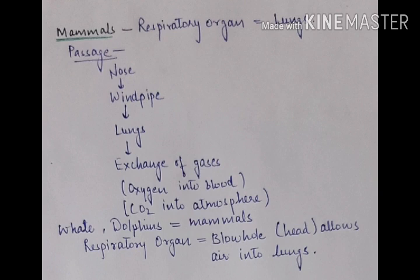Now let's deal with mammals. The respiratory organ for mammals is lungs. The passage through which air enters is the nose, and through the nose it enters the windpipe, reaches the lungs, and there the exchange of gases takes place — oxygen goes into the blood and carbon dioxide comes out into the atmosphere. Whales and dolphins are also mammals and have lungs, but they live underwater.